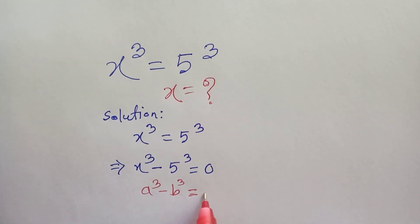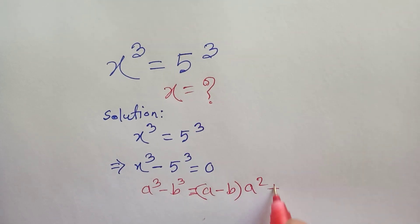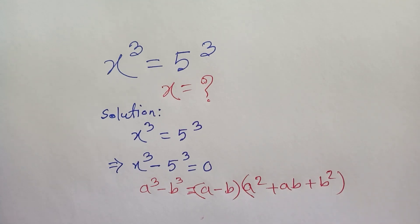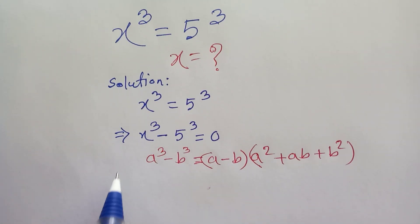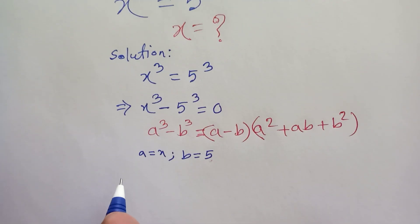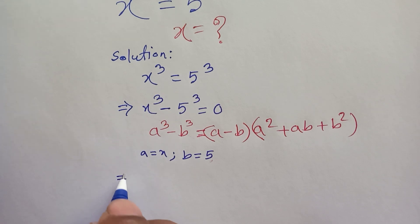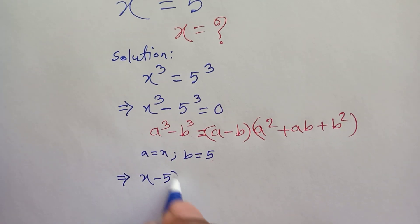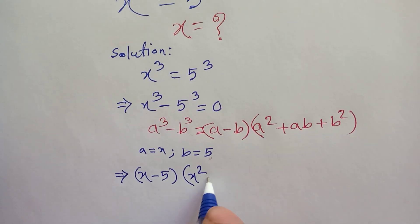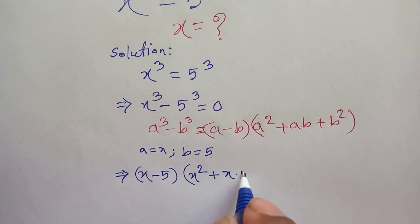We know that a cubed minus b cubed is equal to (a minus b) times (a squared plus ab plus b squared). So according to this formula, if a equals x and b equals 5, we can write (x minus 5) times (x squared plus x times 5...